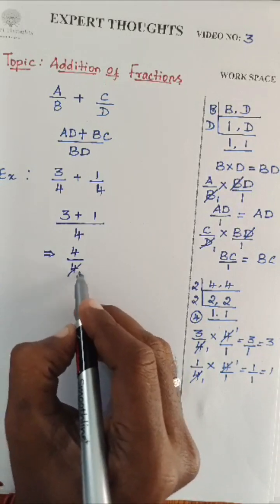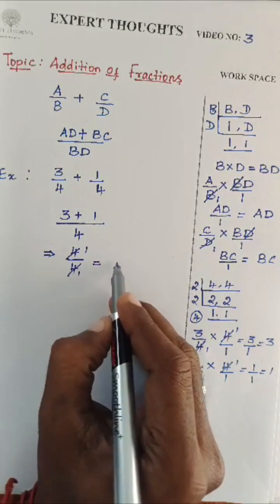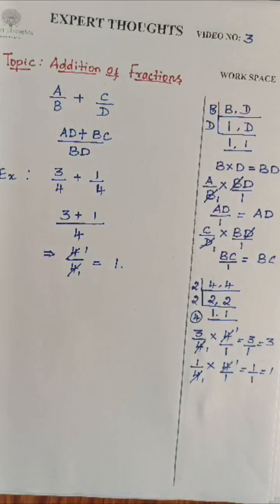4 ones are, which is nothing but 1. Right? You know that the quarter plus 3 fourth becomes 1. Right? Example, quarter kg of sugar plus 3 fourth kg of sugar becomes 1 kg of sugar.